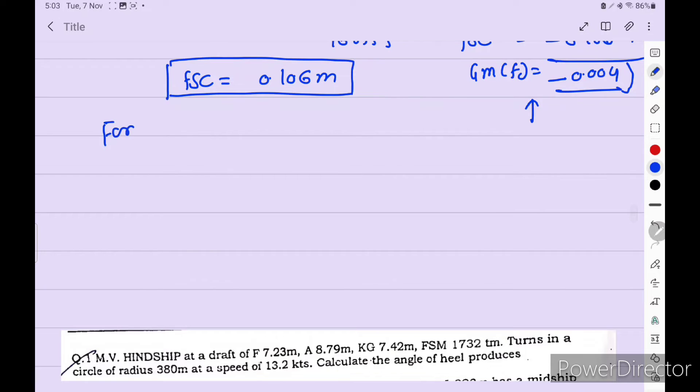Now for displacement 16875.5 ton, we need to find VCB. VCB is equal to KB from the ambient ship particulars. 4.304 meters. Okay. This is for ambient ship particulars. Now KM we know that KM is equal to KB plus BM. We know that KB and KM. So KM is equal to 8.26 and KB is 4.304 is equal to BM.